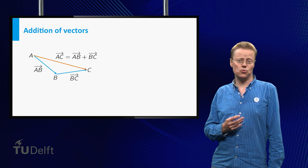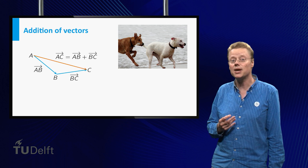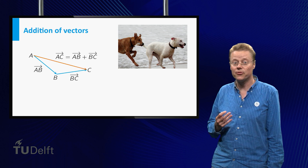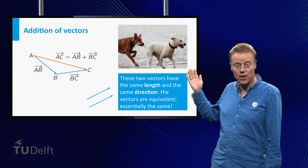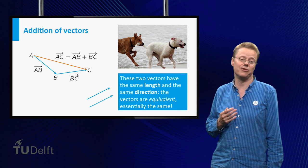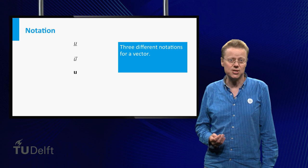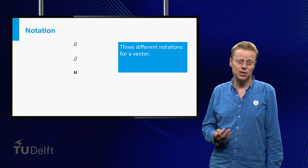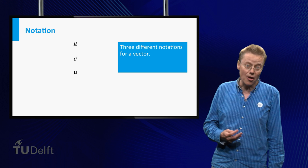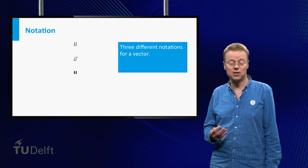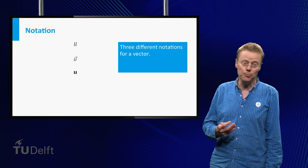Now, what to do if the two vectors are not nicely attached, in the sense that the head and the tail of the two vectors are not connected? Well, it is important to realize that for vectors only length and direction are important. In that sense, the two vectors given here are actually equivalent. When we look at the vector u or v, we have to stress that we mean vectors rather than numbers. Unfortunately, there is not just one universally accepted notation to do this. Often u is underlined to stress that it is a vector and not a number. Other people use u with a little arrow on top, and other people use boldface.